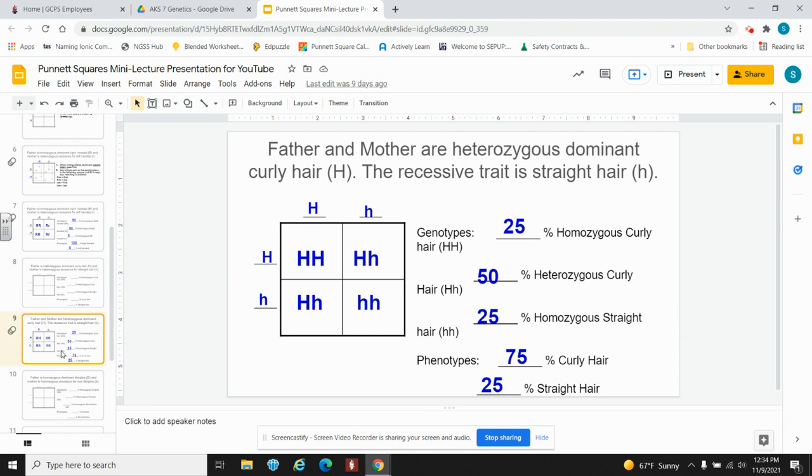We've split the alleles, uppercase H, lowercase h. After we completed the cross, we have one of four homozygous curly. So 25% are uppercase, uppercase. Two of four boxes are heterozygous curly. So 50% are uppercase, lowercase. One of four boxes is homozygous straight. 25% of the boxes have lowercase, lowercase.